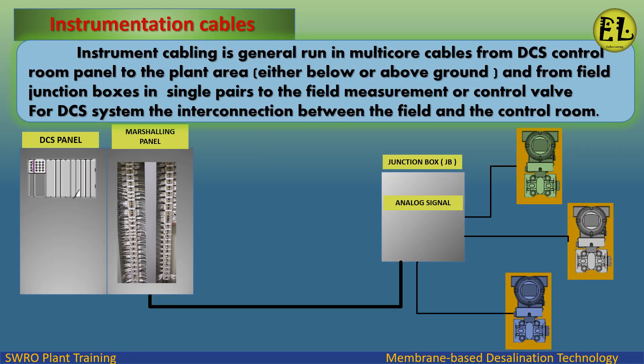Instrument cabling is generally run in multi-core cables from the DCS control room panel to the plant area, either below or above ground, and from field junction boxes in single pairs to the field measurement or control valve, forming the interconnection between the field and the control room.